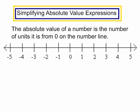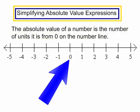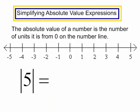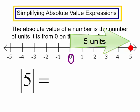We are going to talk about simplifying absolute value expressions. Let's begin by reviewing what absolute value means. The absolute value of a number is the number of units it is from 0 on the number line. The absolute value of 5 — here is 0 on the number line, and here is 5. It is 5 units away from 0, so the absolute value of 5 is 5.